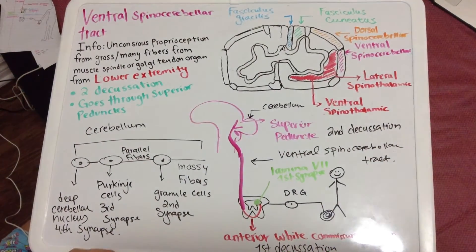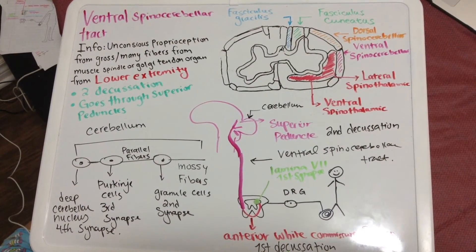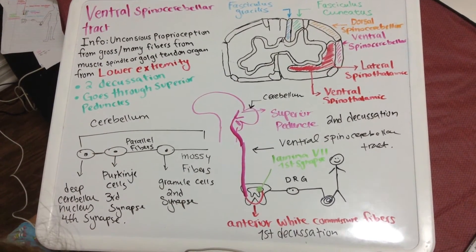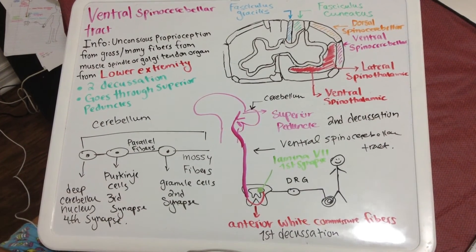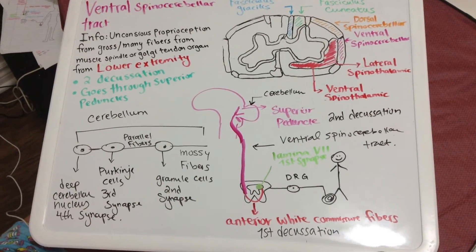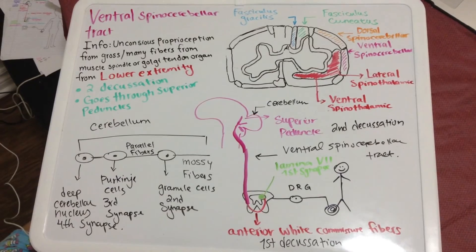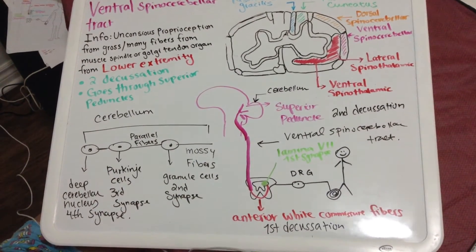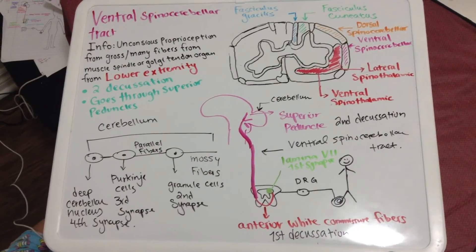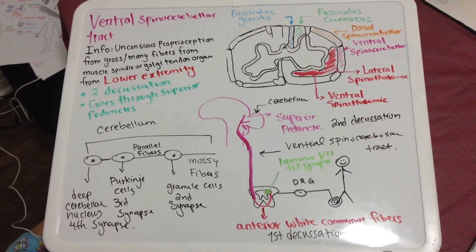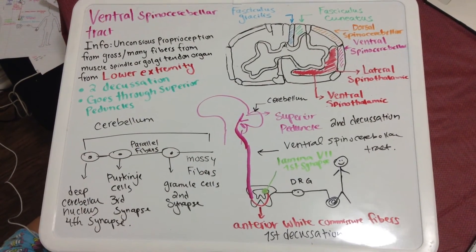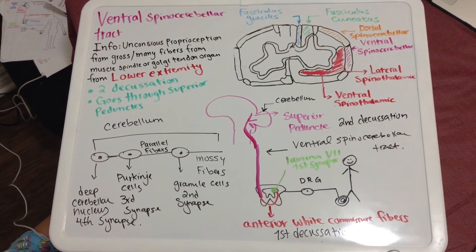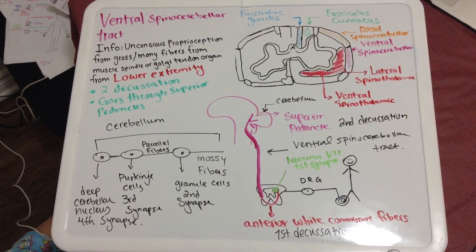The fibers then ascend via the ventral spinocerebellar tract into the brain, entering the cerebellum through the superior peduncles, where they decussate again (second decussation). At this point the information is processed on the same side as where it originated. The superior peduncles become mossy fibers, synapsing at granule cells (second synapse), which relay via parallel fibers to Purkinje cells (third synapse), and then to the deep cerebellar nucleus (fourth synapse).